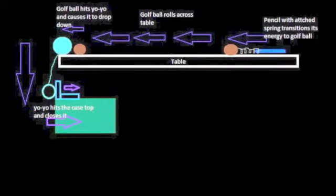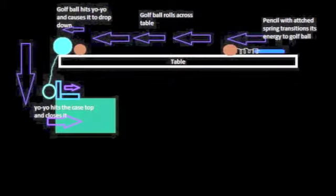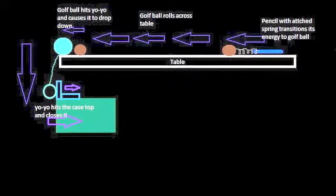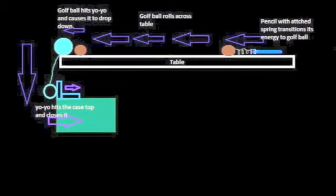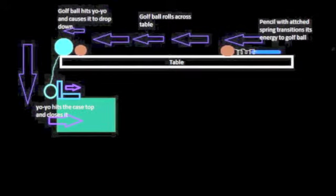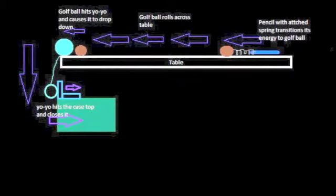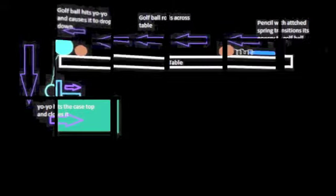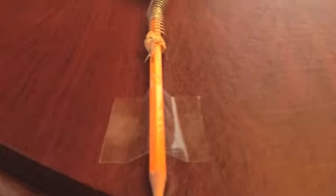Here is an outline and diagram of my experiment. We have a table, and on top of the table is a pencil with a coiled up spring. I will coil up the spring and let it go, then it will hit the golf ball which will roll across the table, hitting a yo-yo placed at the very end of the table. The yo-yo will then fall off the table and hit the top of a case, which will then fall over and close.